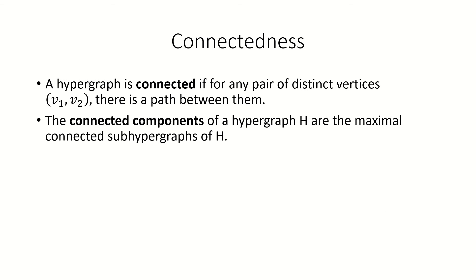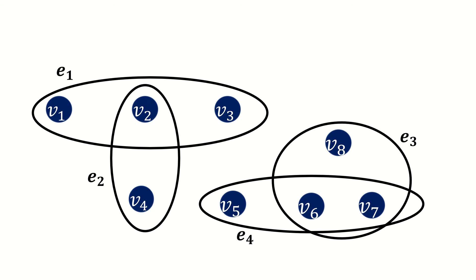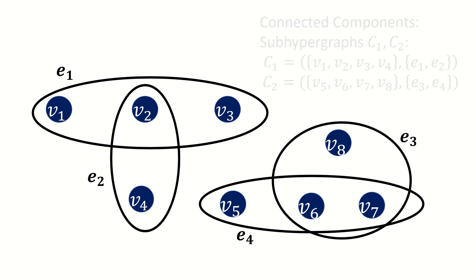Also like in graph theory, we can define connectedness for hypergraphs using paths. A hypergraph is connected if for any pair of distinct vertices there's a path between them. We can define the connected components of a hypergraph to be its maximal connected subhypergraphs. For example, in this hypergraph the connected components are subhypergraphs C_1 and C_2.